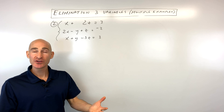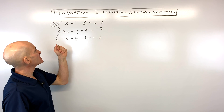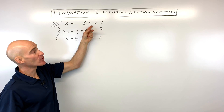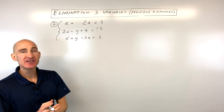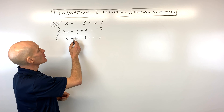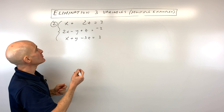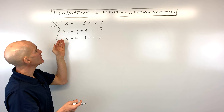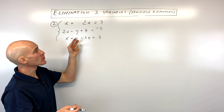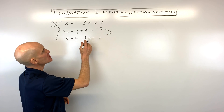Example number 2 — see if you can do this one on your own. Notice something interesting: we're missing a y in the first equation. So to make it easy, let's focus on eliminating the y's. This way we'll just be left with two variables and two equations involving x and z. You can be strategic — here the y's are going to be the easiest to eliminate. I'll add the second and third equations together.